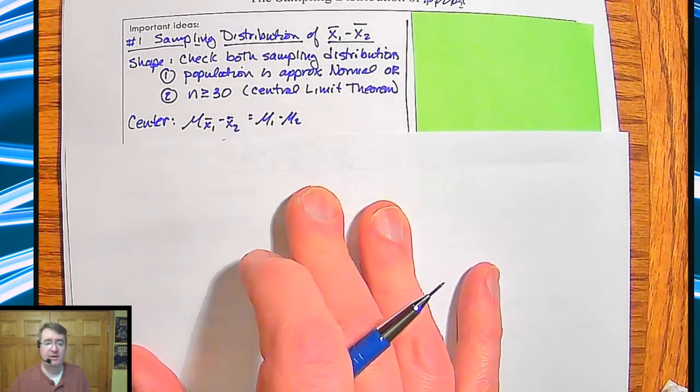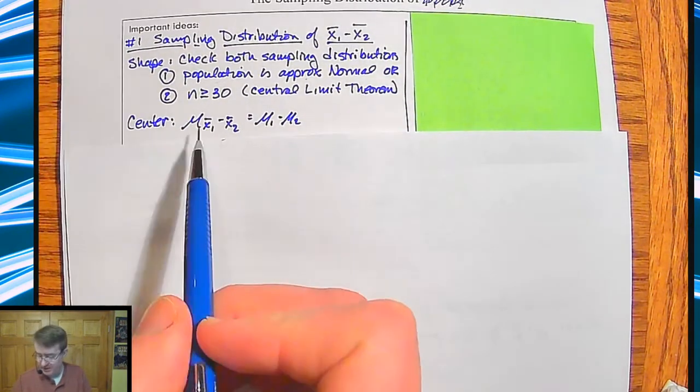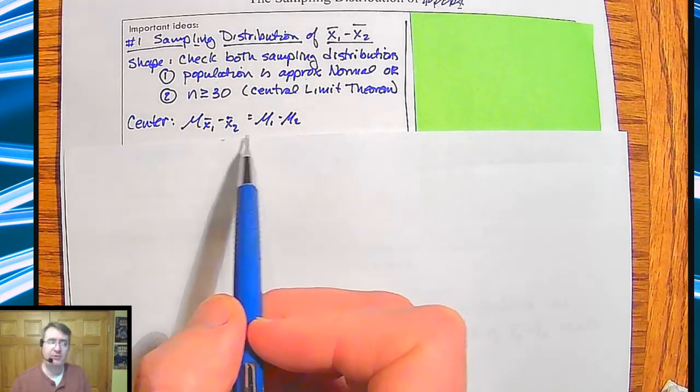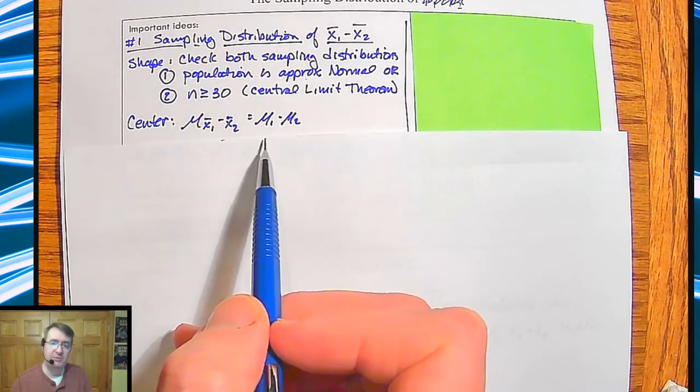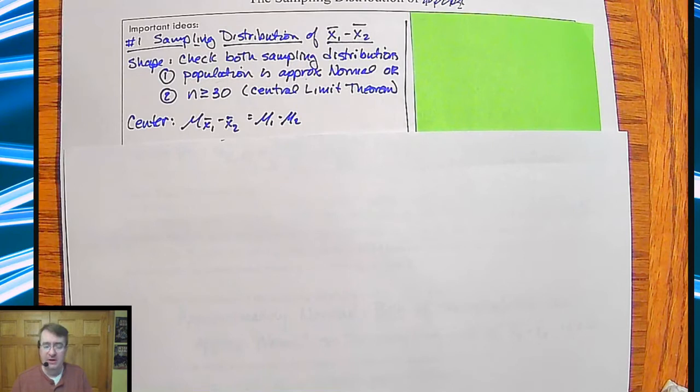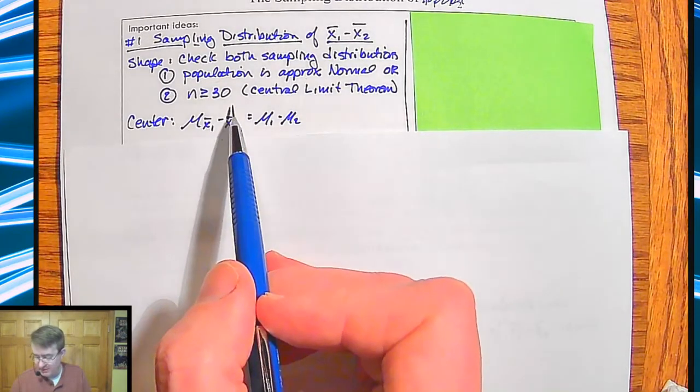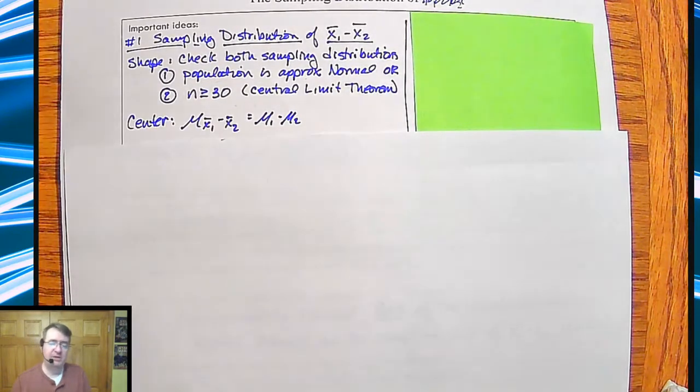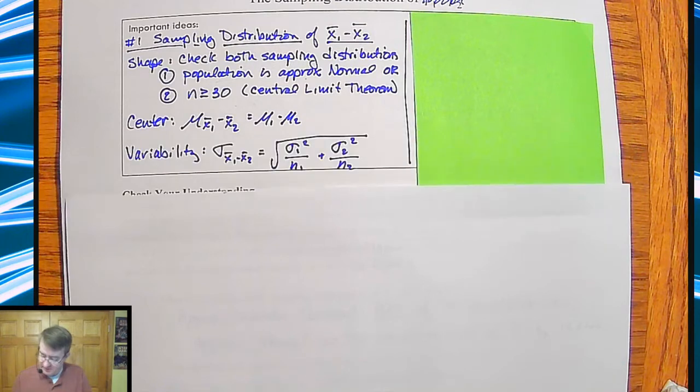So the difference, the mean of the differences of the two samples is going to be the same as the difference between the two population means. There's that bridge step here where you're taking the difference of the means of the two samples. But that's the same as the population. And then after that is variability.